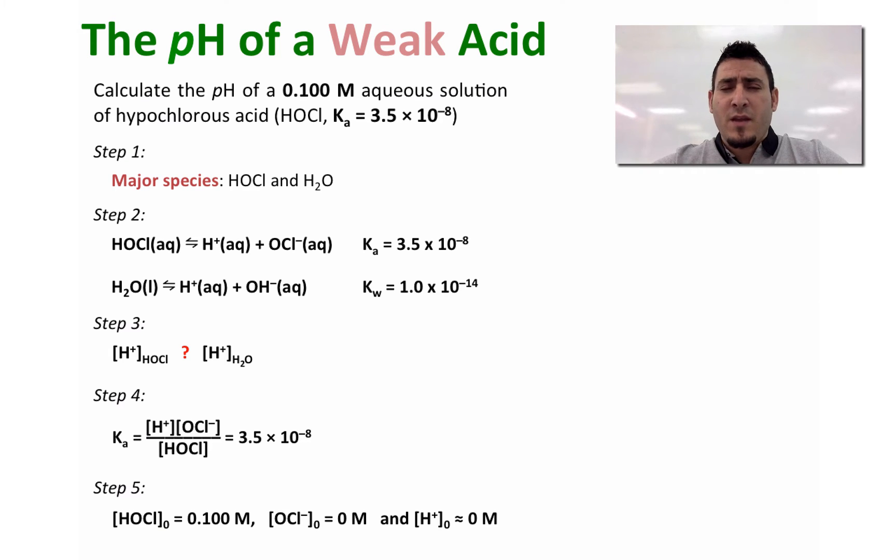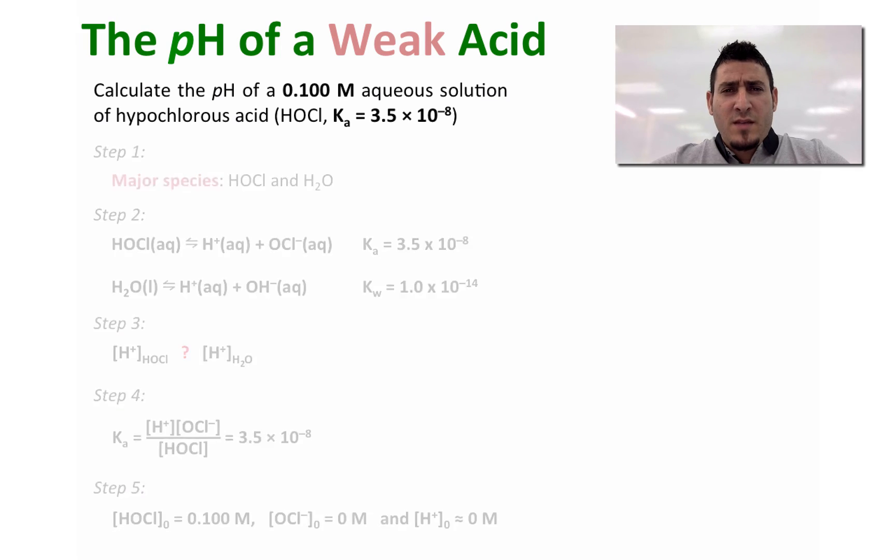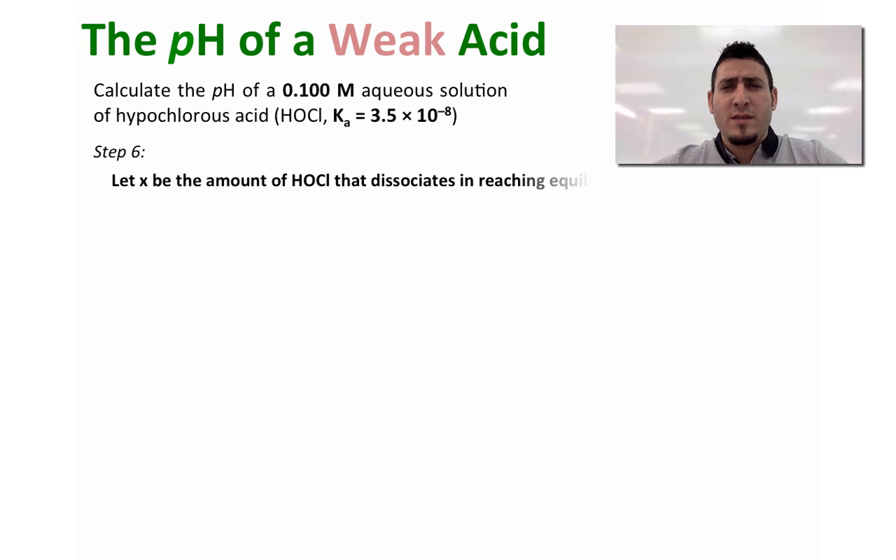We have 0 molar for H+ since we are ignoring the H+ that's coming from water. Step 6: Let x be the amount of HOCl that will dissociate in water and reach equilibrium. Step 7: We write the equilibrium. Initially we had 0.1 molar of the hypochlorous acid, 0 molar for H+, and 0 molar for OCl-.